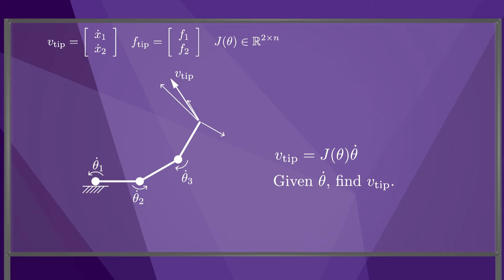You can imagine asking the inverse question: given v-tip, what is theta dot? The answer to this question is not as straightforward, however, because in general, as in this case, the inverse of j does not exist, either because j is not square or because it is singular. Because this 3R robot is redundant, it turns out that for any v-tip, there is a full one-dimensional set of solutions of joint velocities that achieves v-tip. This inverse question will be addressed in more detail in Chapter 6.